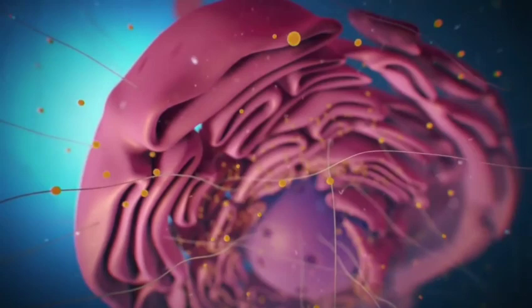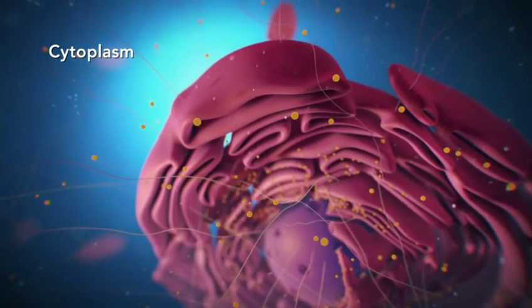Outside the nucleus, the ribosomes and the rest of the organelles float around in cytoplasm, which is the jelly-like substance.